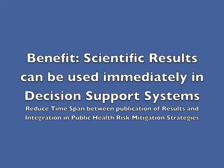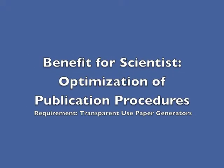The big benefit is that scientific results can be immediately used in a decision support system, reducing the time span between publication of results and their integration into public health risk mitigation strategies. The benefit for the scientist is that they can optimize their publication procedures. One requirement is that there is transparent use of the paper generation, and the grammar that produced the paper or the first version of the paper should be communicated with other scientists.